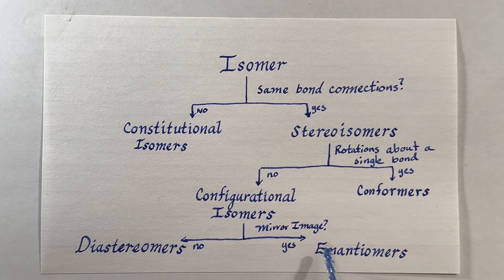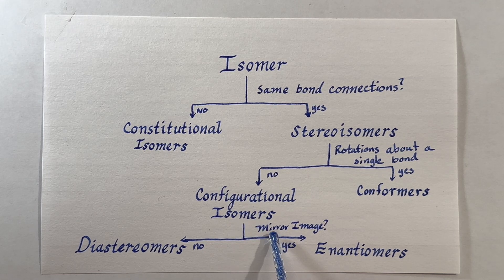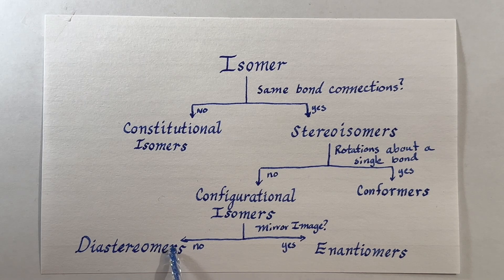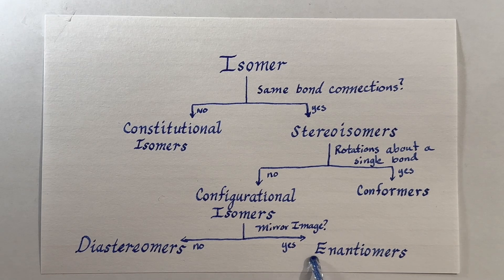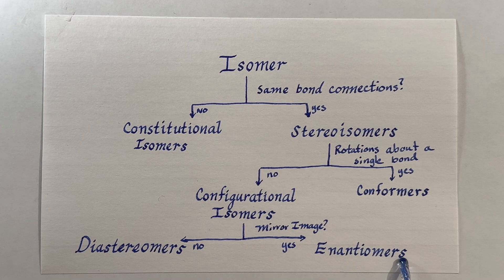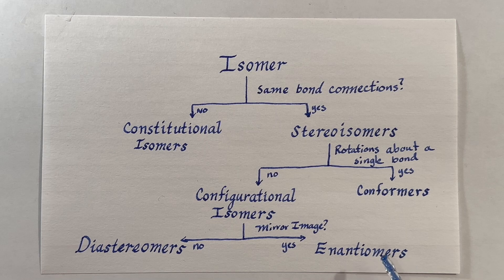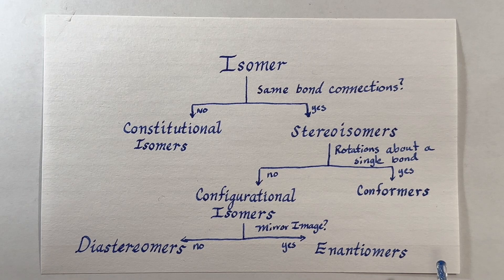If not, then they're configurational isomers, which we can further break down into two different forms. Configurational isomers get broken down into whether it is a mirror image or not of the isomer. If it is, then those are called enantiomers of each other. You may have heard that these molecules are also called chiral — they have a chirality to them.